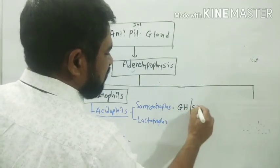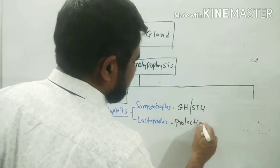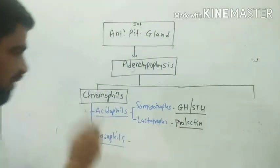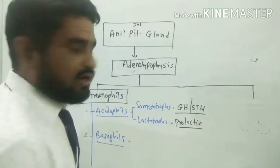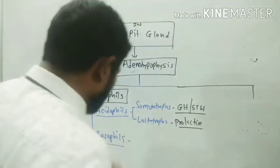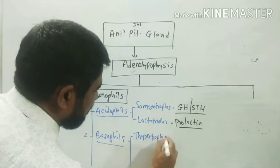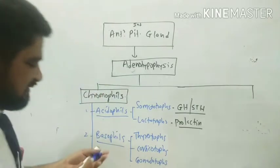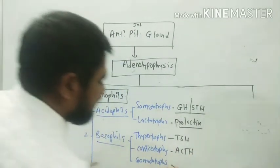Somatotropes produce GH (somatotropic hormone) and lactotropes produce prolactin. The hypothalamus neurohormones stimulate somatotropes to produce GH. Basophils are classified as thyrotropes, corticotropes, and gonadotropes. Thyrotropes produce TSH (thyroid-stimulating hormone), corticotropes produce ACTH (adrenocorticotropic hormone), and gonadotropes produce gonadotropins.